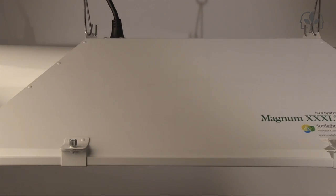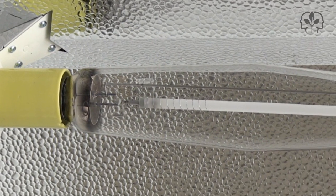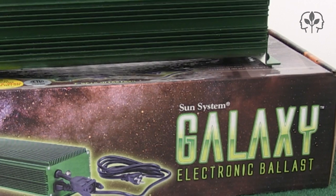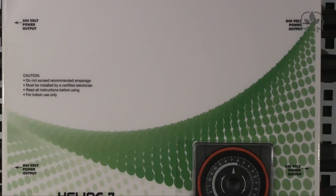Here, we're using 6-inch Magnum XXL reflectors. Inside, we have a 1,000-watt Ultra Sun high-pressure sodium lamp powered by a Galaxy Dial-A-Watt electronic ballast safely controlled by a Helios 7 lighting controller.